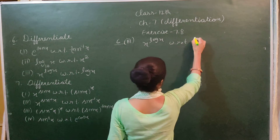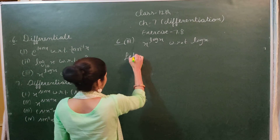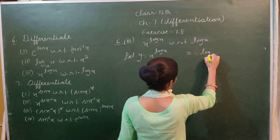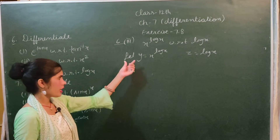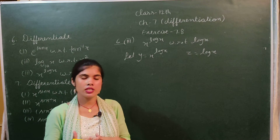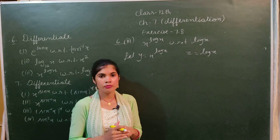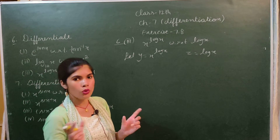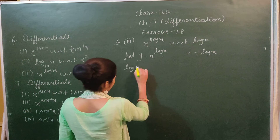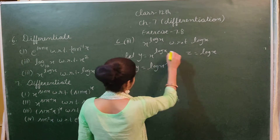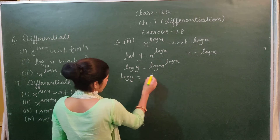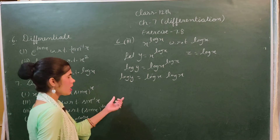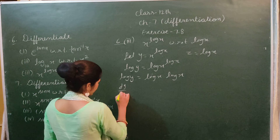In the third part we have to differentiate x^(log x) with respect to log x. We let y = x^(log x) and z = log x. Since x is raised to a functional power, we take log on both sides: log y = log x times log x, i.e., log y = (log x)².